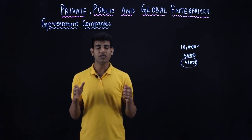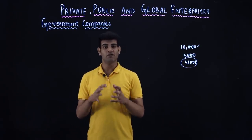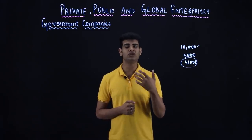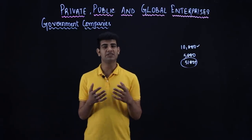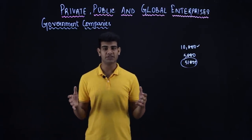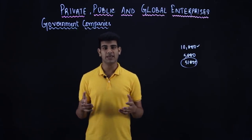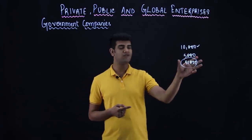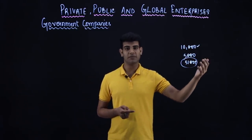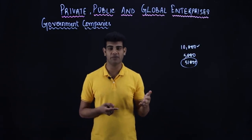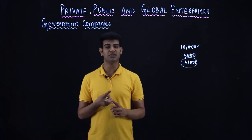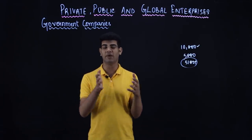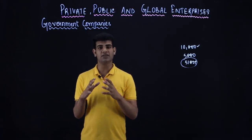Because the government holds major shareholding, the majority of board of directors members are government representatives or ministers, so there is ministerial influence. Other features are the same as a public company. It must be registered according to the Companies Act 2013. Ownership is the state or central government with 51% or more shareholding. There is also a common seal, perpetual succession, separate legal entity, and efficient staff — because owners and managers are different persons.